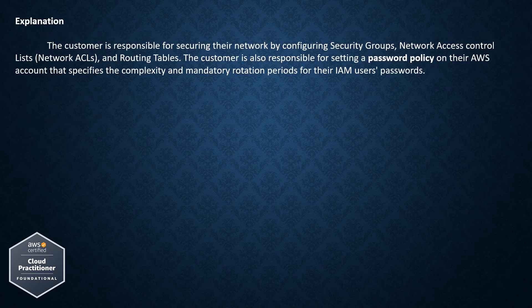Explanation: The customer is responsible for securing their network by configuring security groups, network access control lists (network ACLs), and routing tables. The customer is also responsible for setting a password policy on their AWS account that specifies the complexity and mandatory rotation periods for their IAM users' passwords.